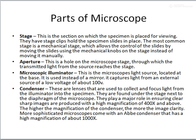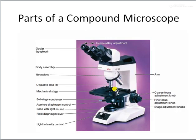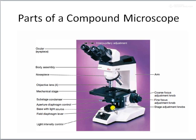The next parts are the stage, the aperture, the microscopic illuminator, and the condenser. The stage is the platform where you place your specimen. It can be moved horizontally as well as vertically to some extent — in both the X and Y directions — allowing you to view different parts of the specimen up to a particular limit.